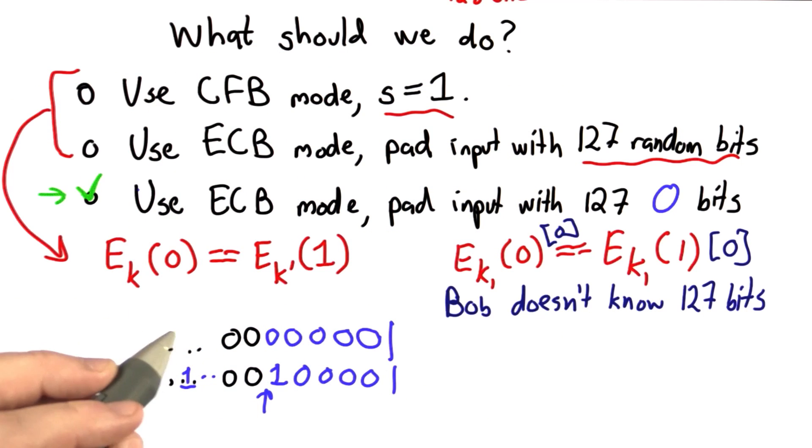This approach works for the coin tossing problem. But there are lots of other situations where we need to commit to values much longer than just one bit. And for that we need something a little more versatile, but with the same idea.